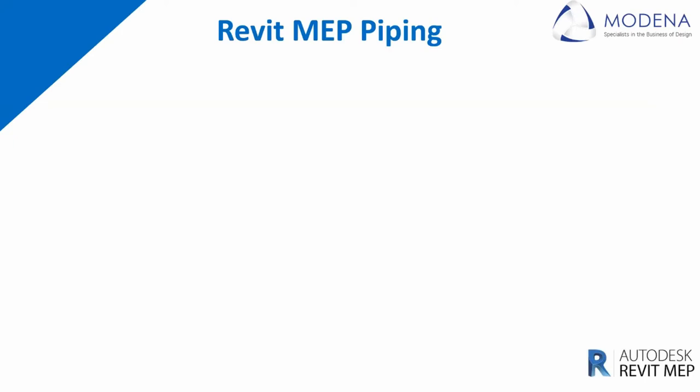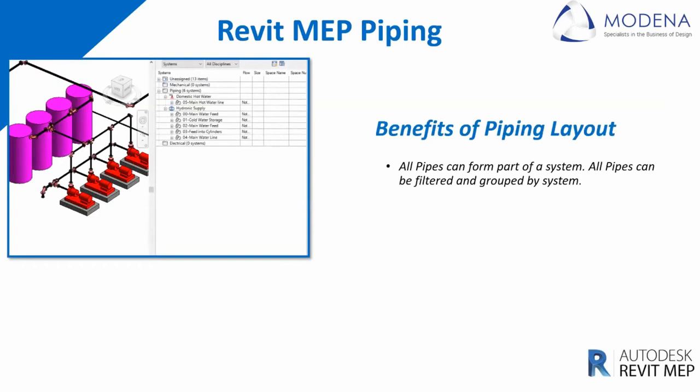Moving on from equipment, we can now deal with piping items. Once we've done our layouts, we can find some real benefits when using Revit piping elements. All pipes can form part of a system and can be filtered and grouped by systems. So whether your system is a hot water system, a cold water system, anything drainage, hydronic, or a specialized system like gas — that can be built within the project.